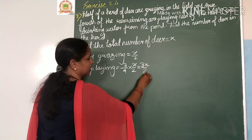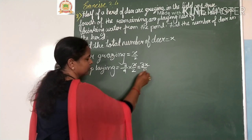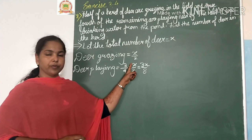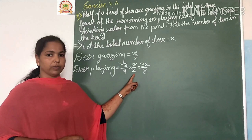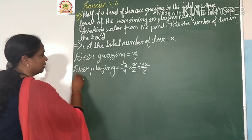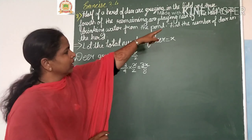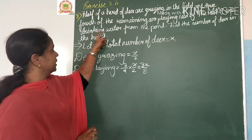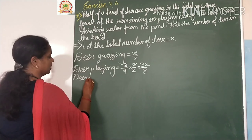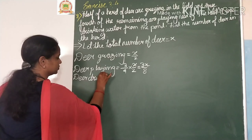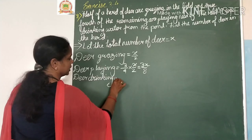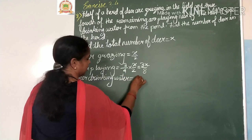The denominator becomes 4 into 2 equals 8. Whenever we do multiplication, numerator to numerator and denominator to denominator — only cancellation between numerator and denominator is possible. The rest nine are drinking water, so water equals nine.